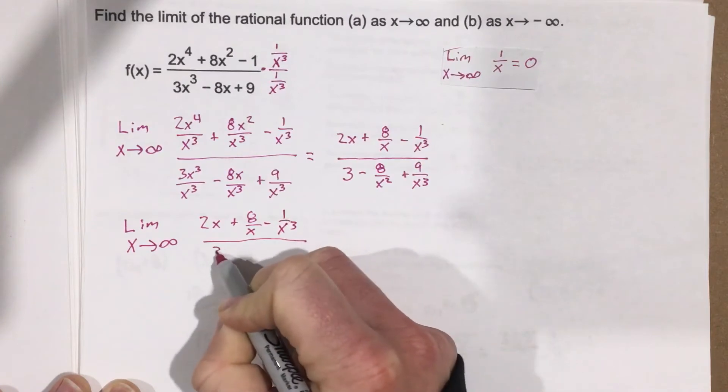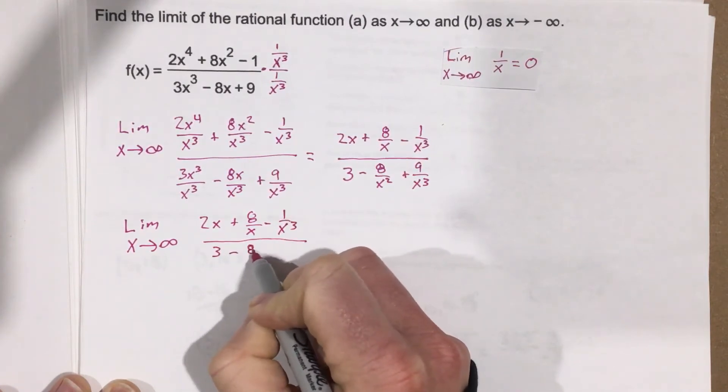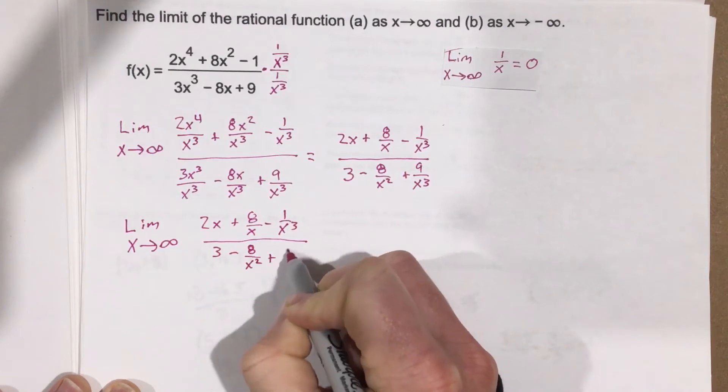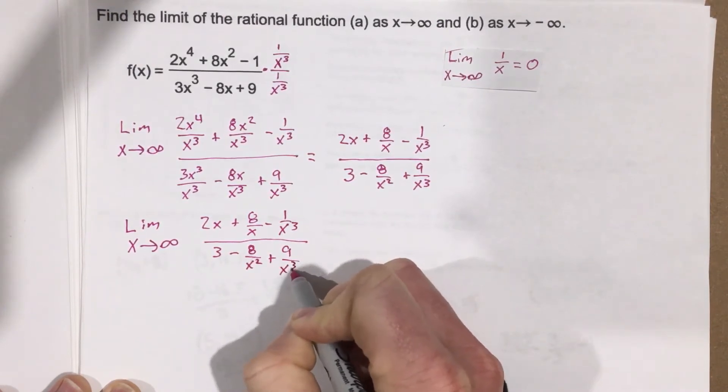all over 3 minus 8 over x squared plus 9 over x cubed. So what's going to happen here?